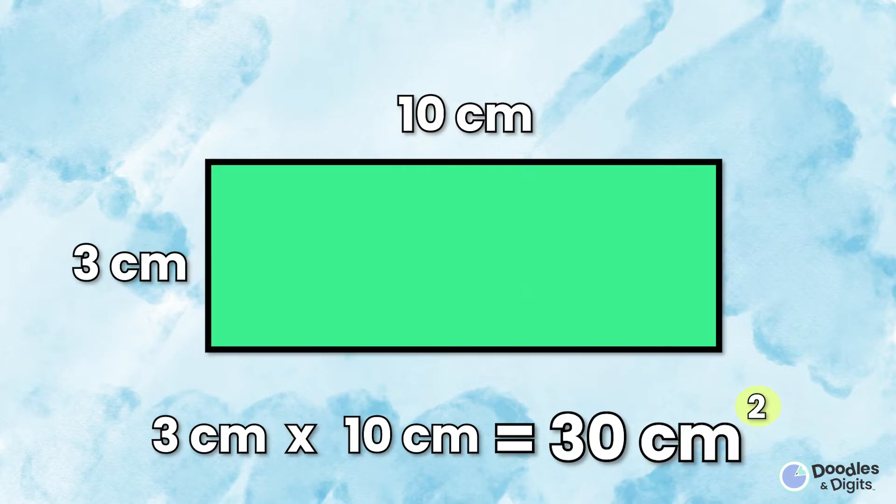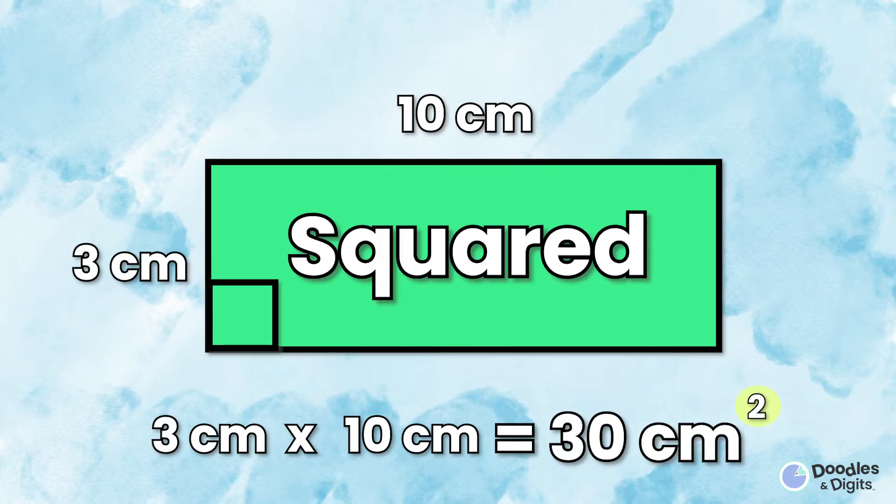Now you might notice there's this little 2 here. The reason that we have to put a 2 next to the unit is because we're actually measuring little squares. If you remember in the beginning of this video, we talked about when we find the area, we're finding the little squares. So we're actually finding 30 centimeter squares. You're going to put that little 2 after each unit when you're finding area.